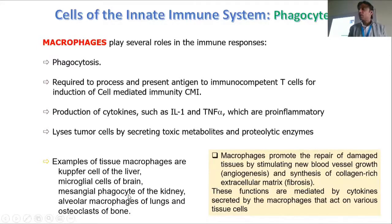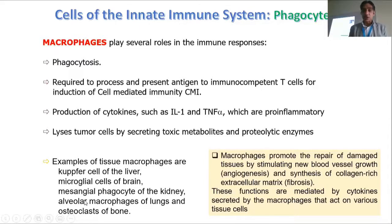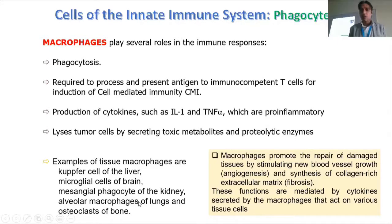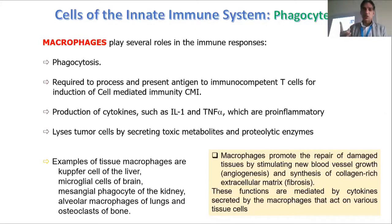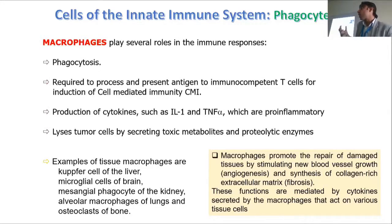Microglial cells are macrophages present in the brain. Mesangial phagocytes are macrophages present in the kidney. Alveolar macrophages are macrophages present in the lungs. Osteoclasts are another type present in bone. Different parts of the body contain different types of macrophages, but all execute the same macrophage function.